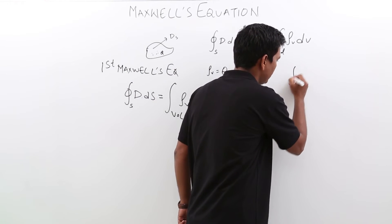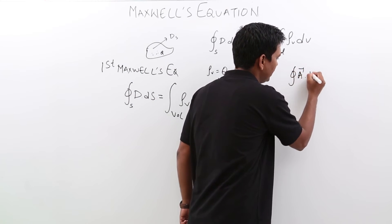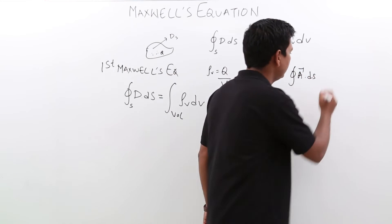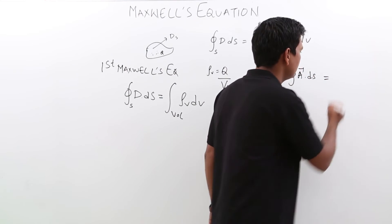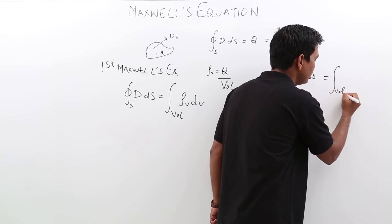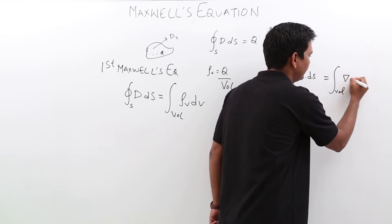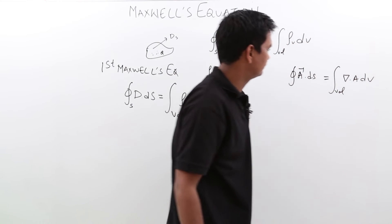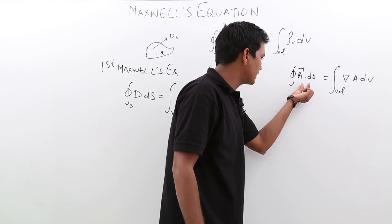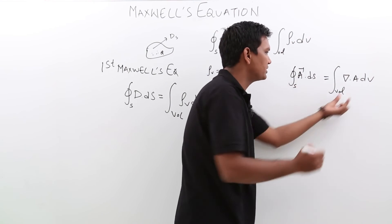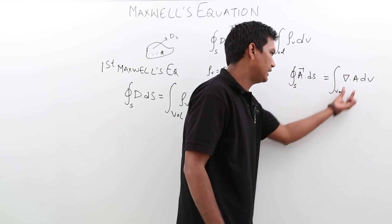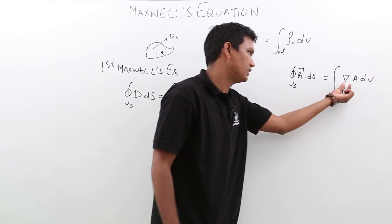Gauss divergence theorem says that the surface integral of A dot dS can be represented as the volume integral of del dot A dV. So, the surface integral is represented in terms of a volume integral of the divergence, del dot A.